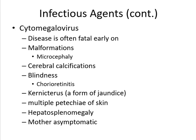Moving to another infectious agent: cytomegalovirus. Exposure to cytomegalovirus may lead to disease that is often fatal, with malformations including microcephaly, intracranial calcification, blindness due to chorioretinitis, a form of joint contracture called clinodactyly, multiple petechiae of the skin, and hepatosplenomegaly. The mother in this case is typically asymptomatic.